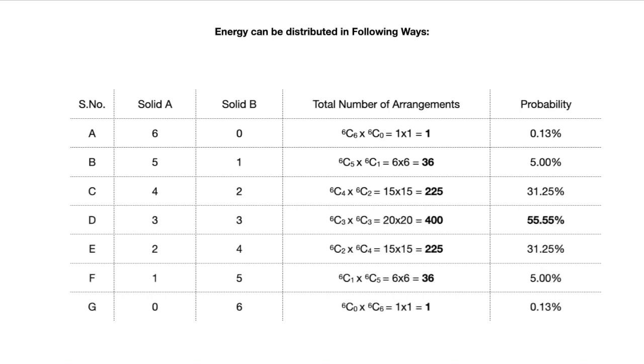Right now on your screen you can see the different numbers of arrangements which are possible. I have labeled them as A, B, C, D, E, F and G. In the second column you'll see the amount of quanta of energy in solid A. The total number of arrangements in which these six quanta can be distributed among A and B is shown in the fourth column. The probabilities are expressed in the last column.